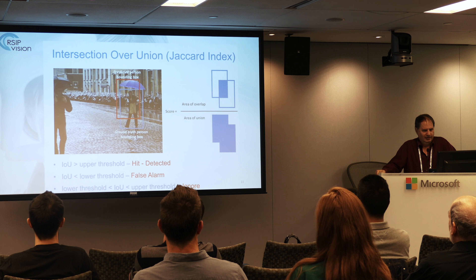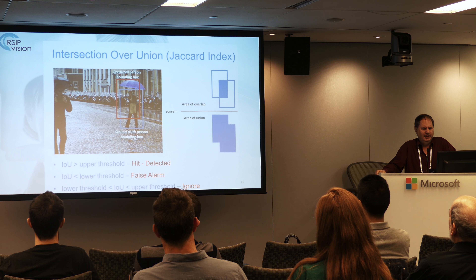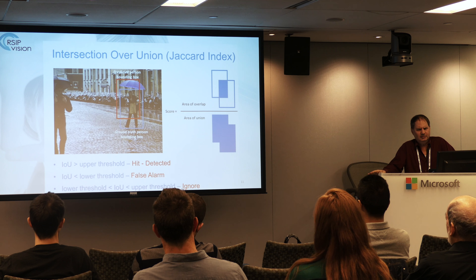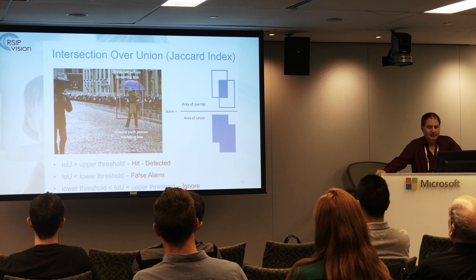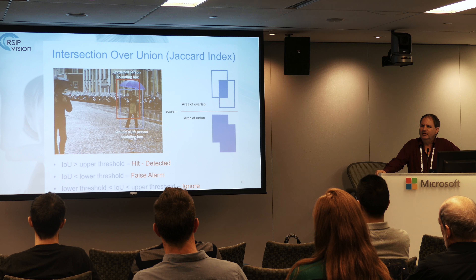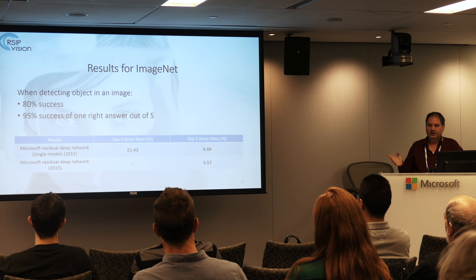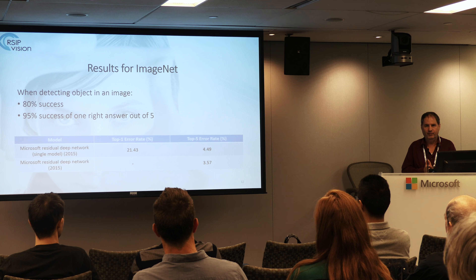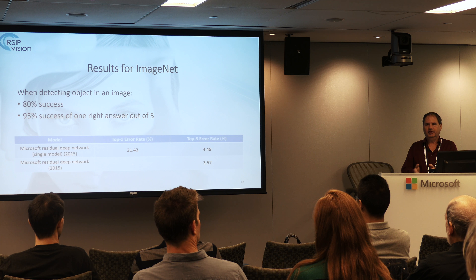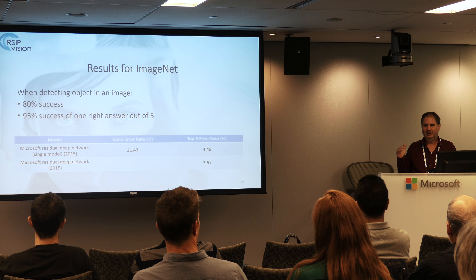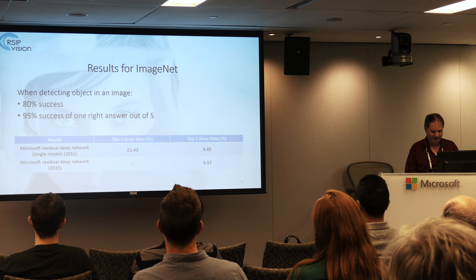In detection tasks where we have a bounding box, the ground truth may have been created in a specific way. If you want to measure success you can use intersection over union, but it doesn't always reflect the answer — finding the person at all may be enough for some applications. For ImageNet, for example, we don't look only for the best result; if the correct result is one of the top five, that is sufficient. This is another valid measurement approach.